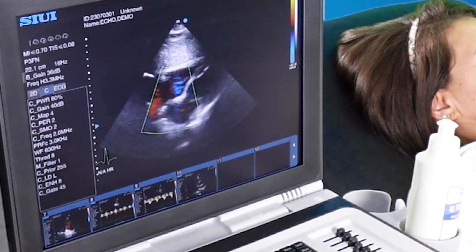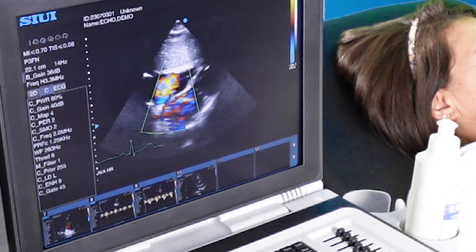By placing color Doppler over the interatrial septum, we can check for any shunts.